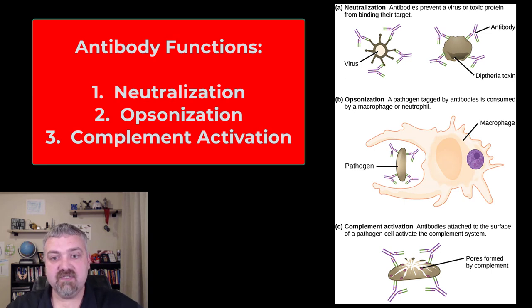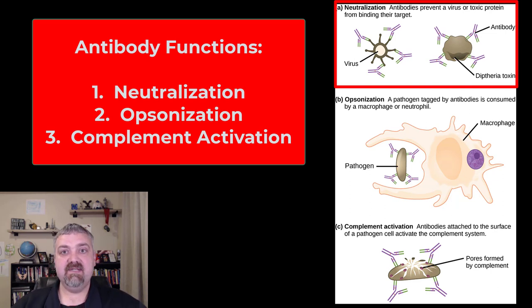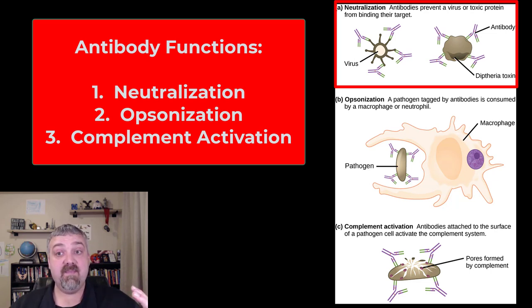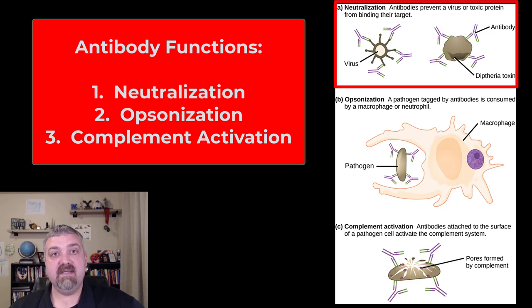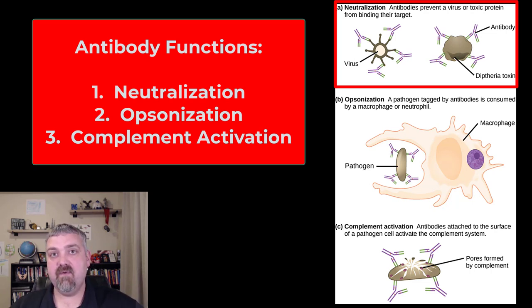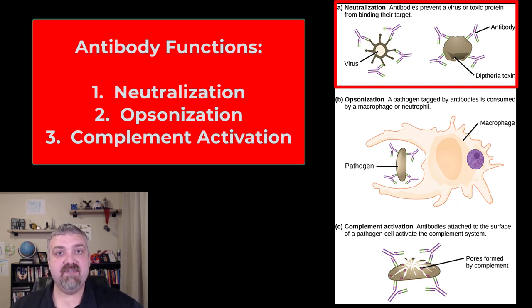The functions of antibodies — there are multiple functions. The first one is neutralization. What some antibodies can do is bind and coat the outside. Here you see a virus; you can also do the same thing with a bacteria or a toxin. Antibodies coat a virus and a toxin so much that they can't use their receptors to dock to their target. This is how a lot of antiviral and toxoid vaccines work — they grab these viruses and toxins, coat them, and neutralize them before they can do any harm. The diphtheria toxin is only going to hurt you if it reaches its target; it can't do so if it's coated with antibodies.